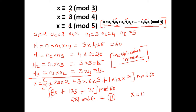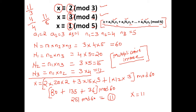We can verify: 11 mod 3 — 11 divided by 3, remainder is 2. Correct. 11 mod 4 — 11 divided by 4, remainder is 3. Correct. 11 mod 5 — 11 divided by 5, remainder is 1. Correct. So the unique solution x = 11 satisfies all given equations. That is how you find x using the Chinese Remainder Theorem.